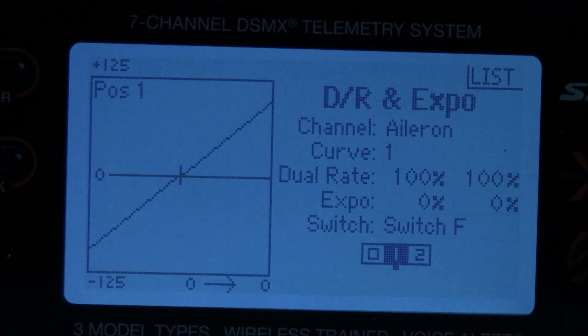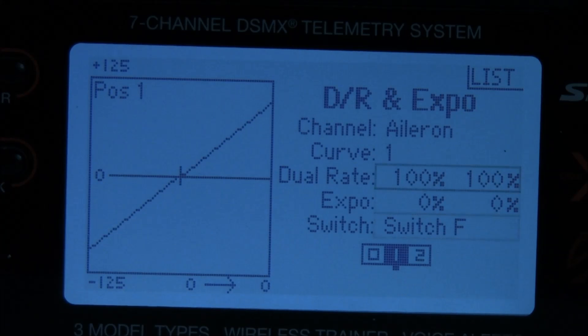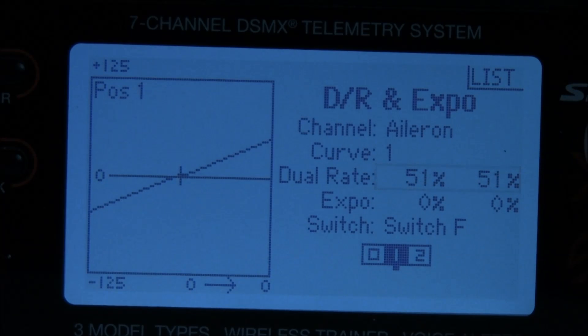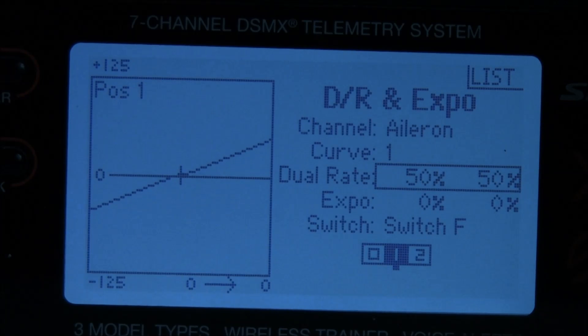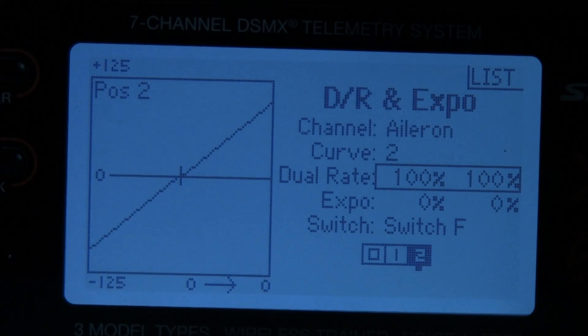You can see it switch down there, the indicator. Scroll back up to the dual rate and depress the scroll switch once. That lets you program it. 50 percent. Depress the scroll switch once to lock that in.